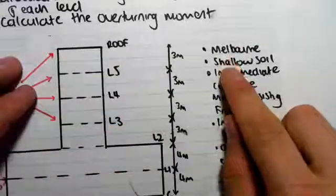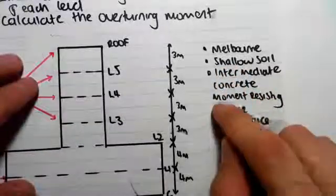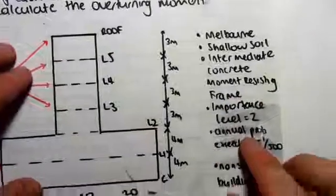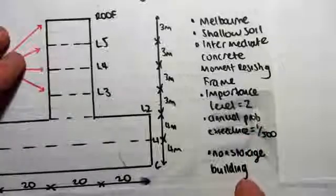The building is located in Melbourne. We're told that it's shallow soil, it's an intermediate concrete moment resisting frame, the importance level is two, the annual probability of exceedance is one in 500, and it's a non-storage building.